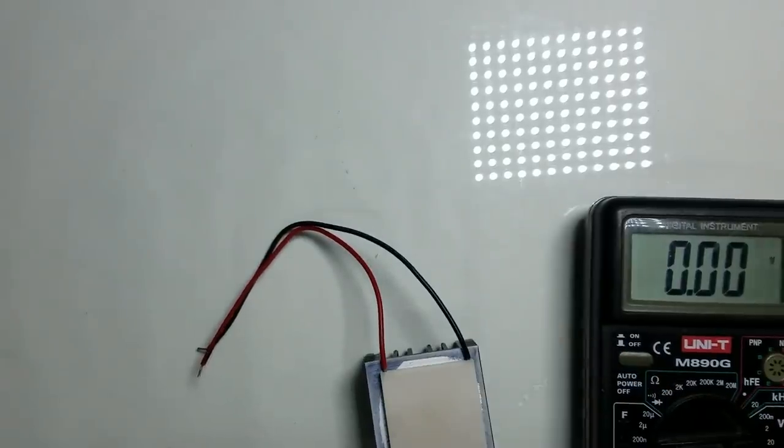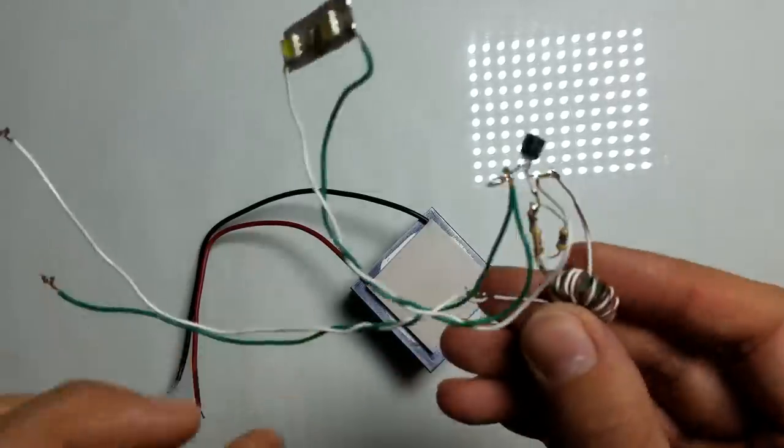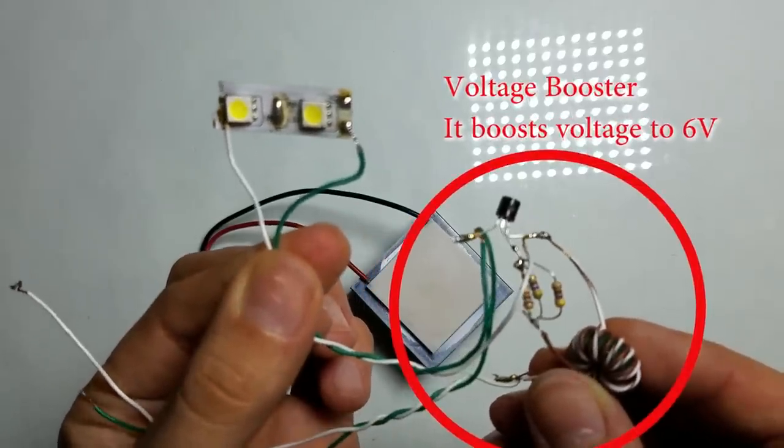But it is not enough, for example, for an LED. To make LEDs work with 0.6 volts, we need a voltage booster.